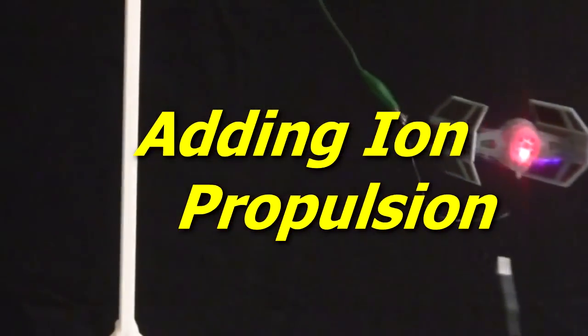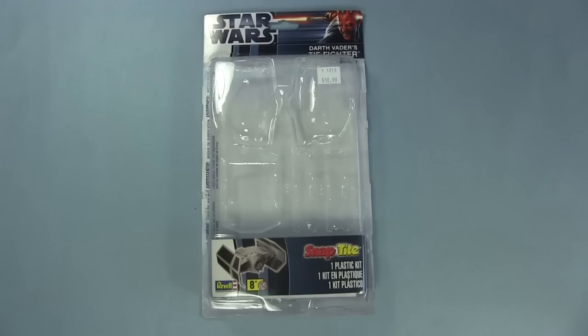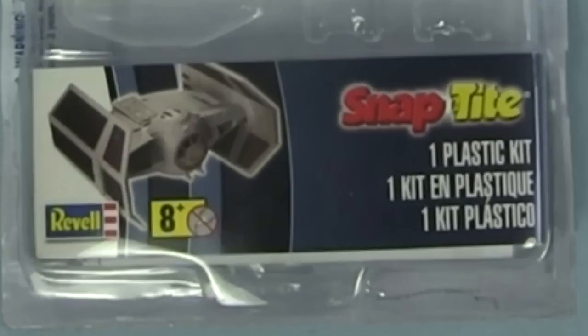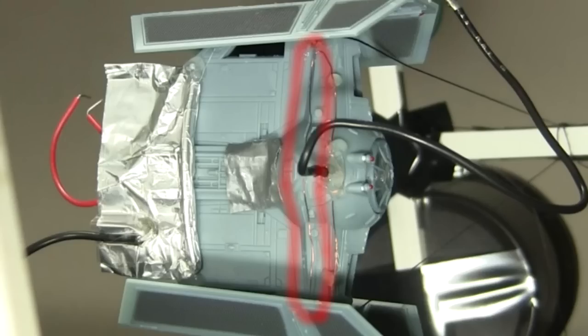Here's how I added the ion propulsion. The TIE Fighter model came in this packaging. It's the Snap-type by Ravel. The ion propulsion needs two parts facing each other: a sharp part, which is this very thin bare wire, and a smooth part, which is this aluminum foil with a rounded edge.